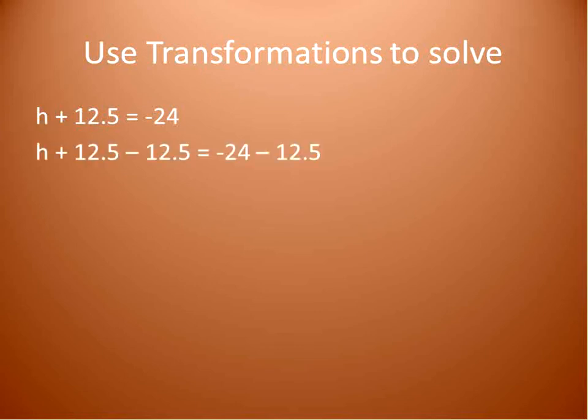I had h. I added 12.5. The opposite of adding 12.5 is to subtract 12.5. I'm going to subtract 12.5 from both sides of the equation to keep it balanced. And that's it. 12.5 - 12.5 gives me 0. So on the left side of my equation, I'm left with h by itself. That's what I want. I had negative 24. I subtracted 12.5. So that gives me negative 36.5.